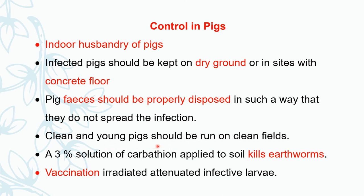Clean young pigs should be run on a clean field so that they do not get infection. To kill the earthworms, sprinkle a 3% solution of carbathion on the soil. Vaccination of young animals — both sheep, cattle, and pigs — with irradiated attenuated infective larvae gives sufficient immunity to the animals.